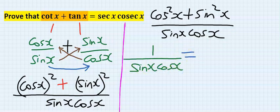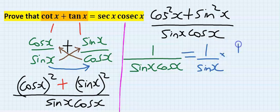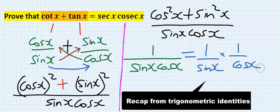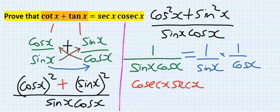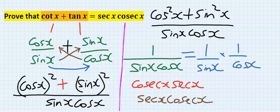This can be rewritten as 1 over sin x times 1 over cos x. Now, 1 over sin x is cosec x and 1 over cos x is sec x. You can equally rearrange and rewrite it as sec x multiplied by cosec x. Both are the same thing.